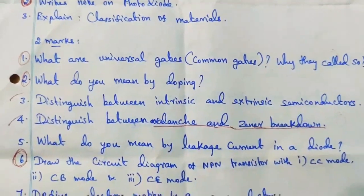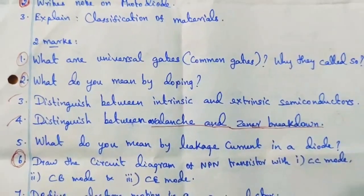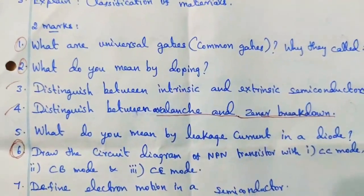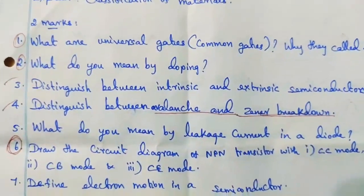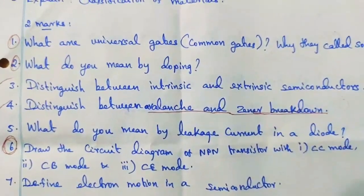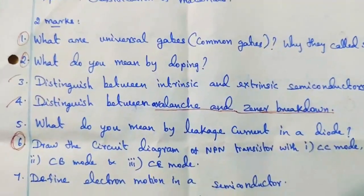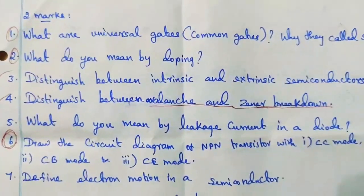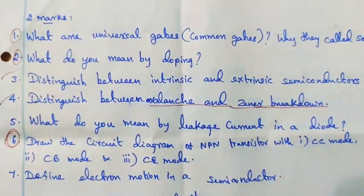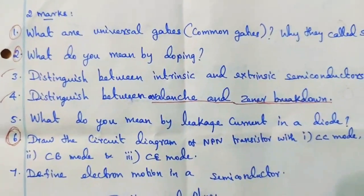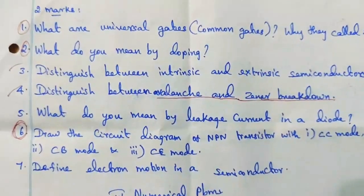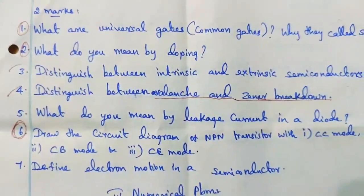1-mark questions: define electron motion in semiconductor. 2nd question: what do you mean by leakage current in a diode? 3rd question: draw the circuit diagram of NPN transistor in common collector mode, common base mode, and common emitter mode.